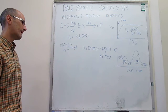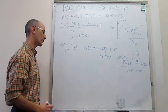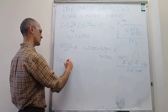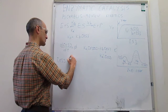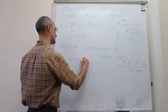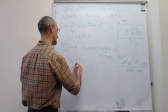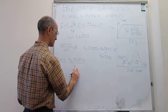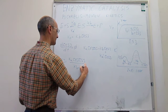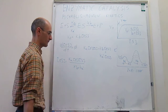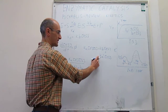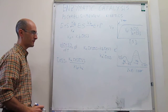Solving this expression for [ES], we find that the concentration of the enzyme-substrate complex is equal to k_A [E][S] divided by (k_A' + k_B).